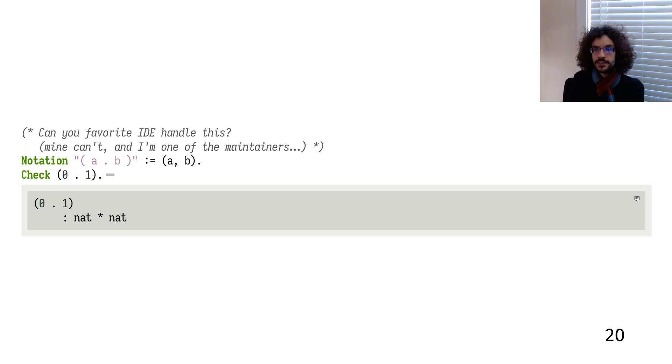An interesting technical challenge is sentence segmentation. Coq's notation system makes it almost impossible to determine where a Coq sentence ends or where it starts. So we use Coq's APIs directly for this.